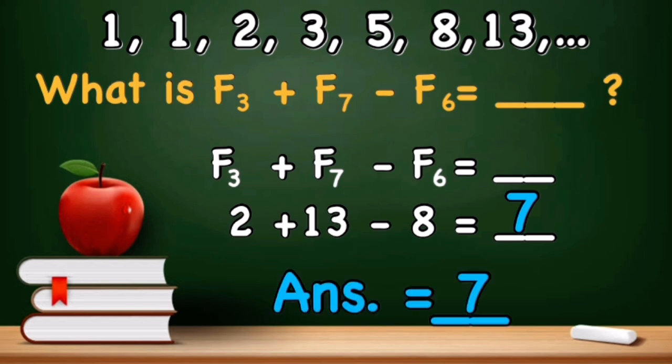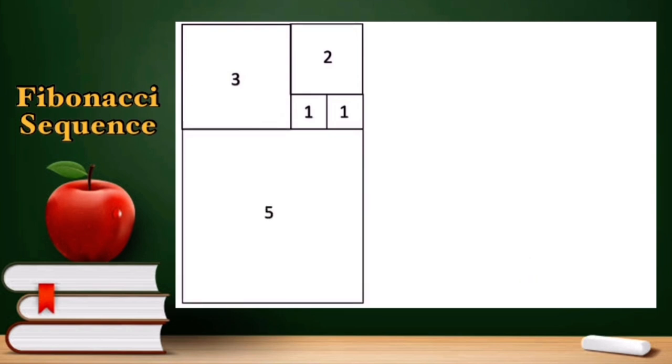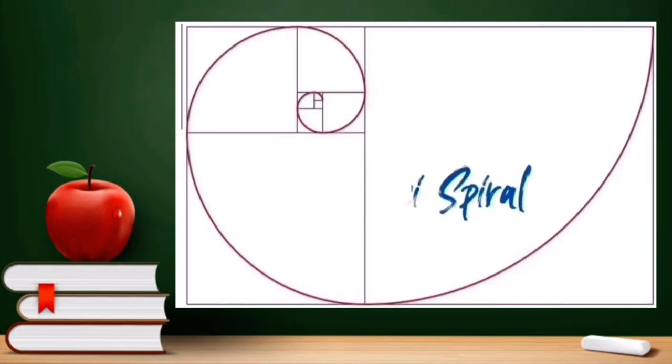Let's visualize these numbers using square tiles. Let's start with a 1 by 1 square, then another. Together, they form a 1 by 2 rectangle. Above is a 2 by 2 square. Next to it is a 3 by 3 square. Beneath is a 5 by 5 square. And if we continue to do this and connect opposing diagonals continuously, it will reveal the Fibonacci spiral.